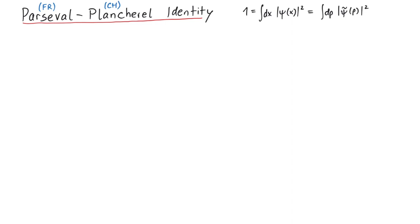So, if we have for example a wave function psi of x, which is normalized, then it is guaranteed that its Fourier transform, psi tilde of p, is also normalized.